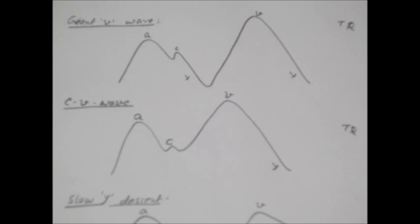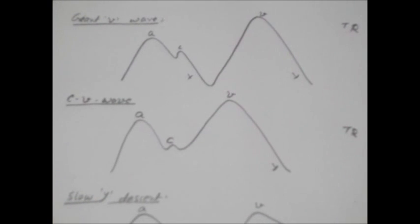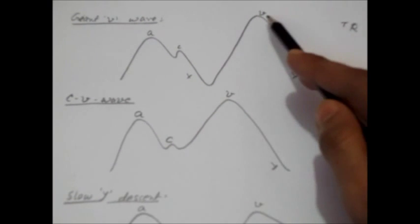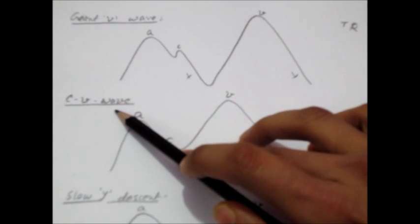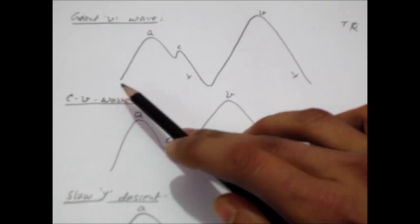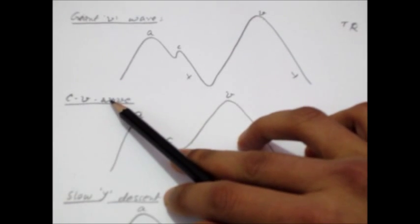In tricuspid regurgitation, we see a giant V wave or a CV wave. A CV wave is seen in very severe tricuspid regurgitation.